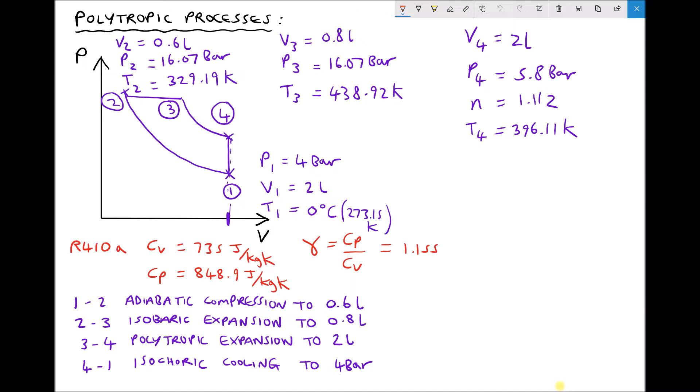We saw how we could apply a range of different polytropic processes to find the unknowns at each of those corresponding points 2, 3, and 4. Now in this video we're going to look at how much work is being done on the gas during each compression phase and how much work is being done by the gas during each expansion phase.